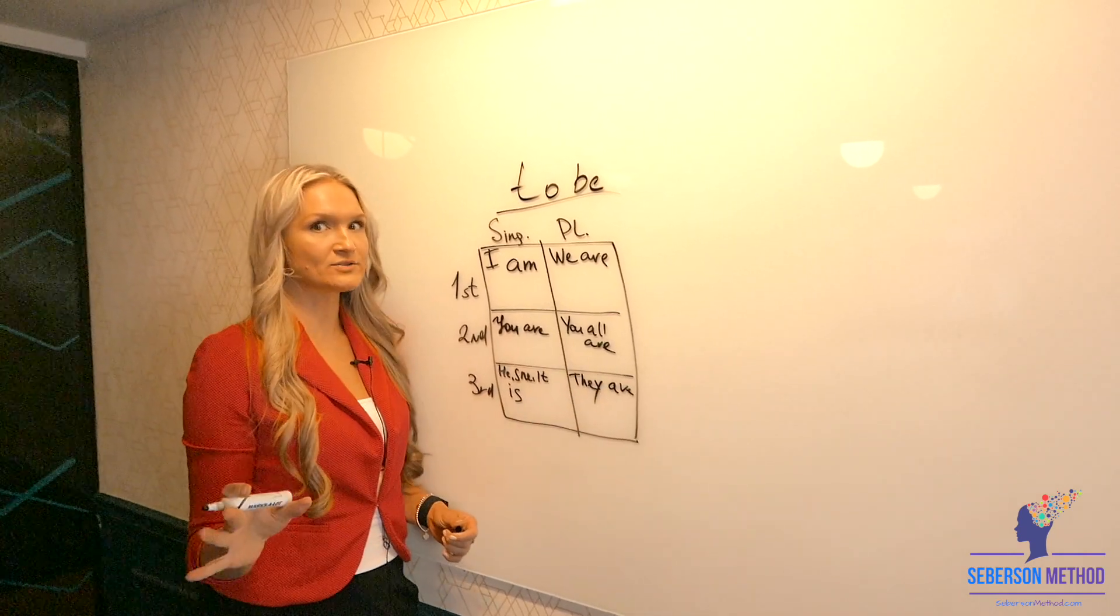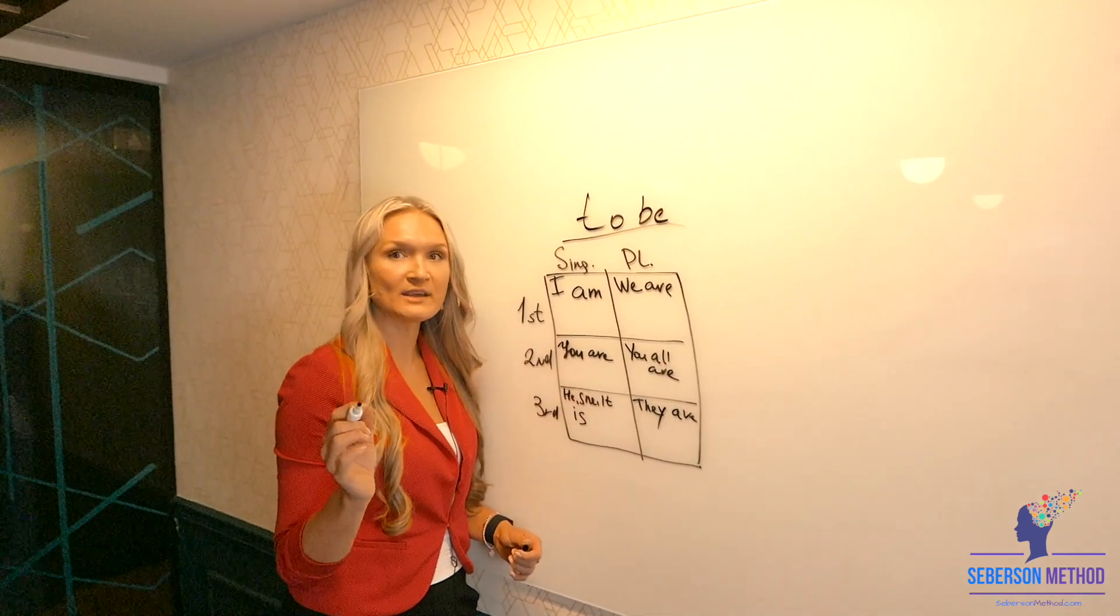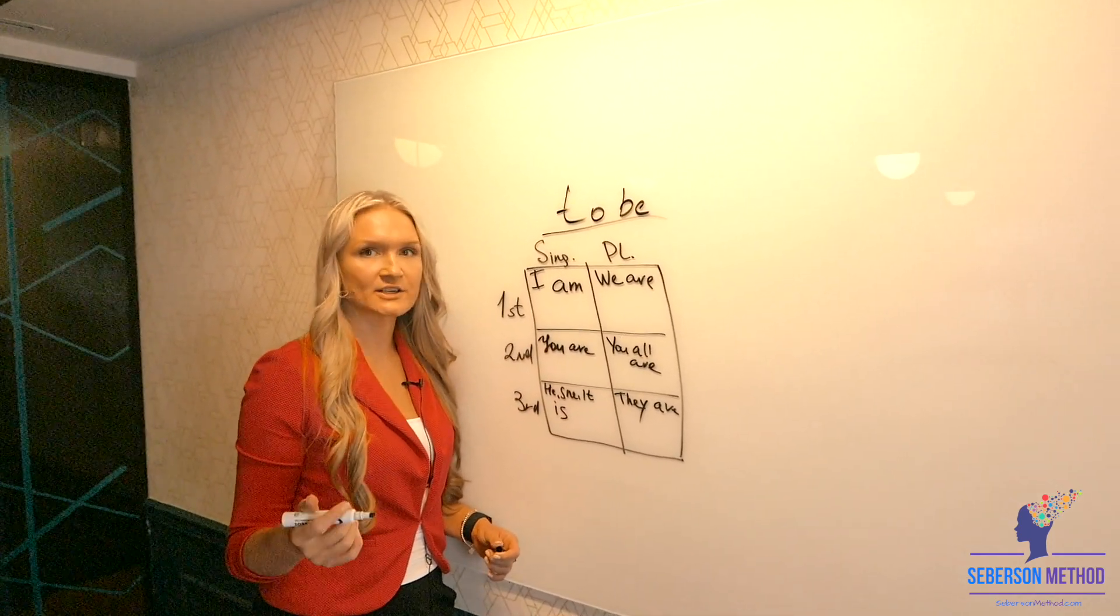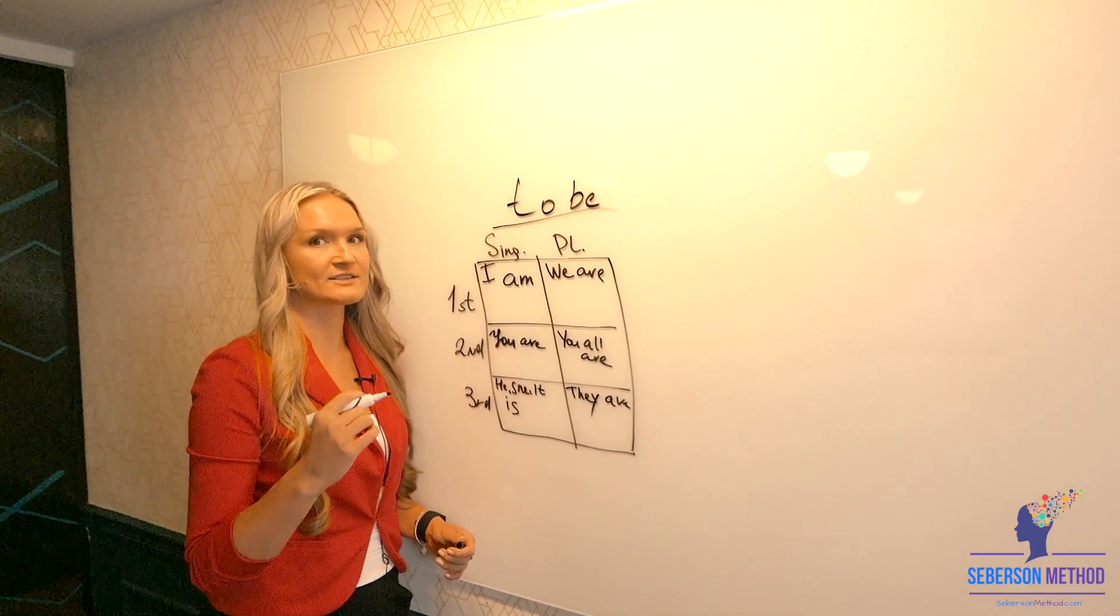This may not be a huge revelation to you but all of these am, are, are, is, this is a to be verb. So whenever you hear your teacher or maybe I'm talking about a to be verb, make sure you understand that that's just a to be verb.